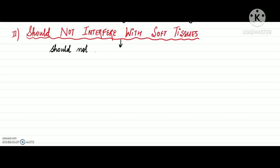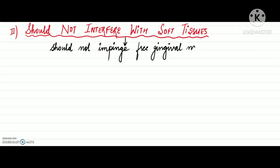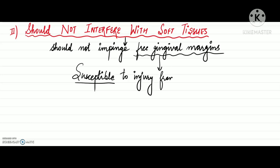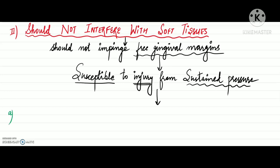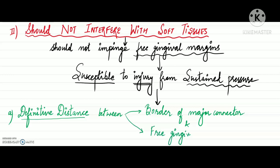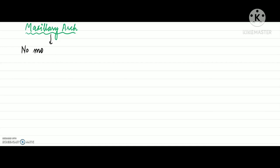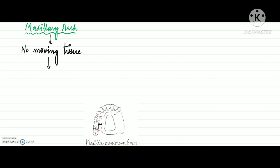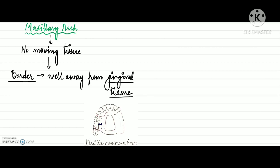The second major requirement is that the major connector should not interfere with the soft tissues. It should not permit impingement of the free gingival margins of the remaining teeth, since the marginal gingiva is highly vascular and susceptible to injury from sustained pressure. Therefore, a definitive distance must be maintained between the border of the major connector and the free gingival margin. In the maxillary arch, since there is no moving tissue in the palate, the borders may be placed well away from the gingival tissues.